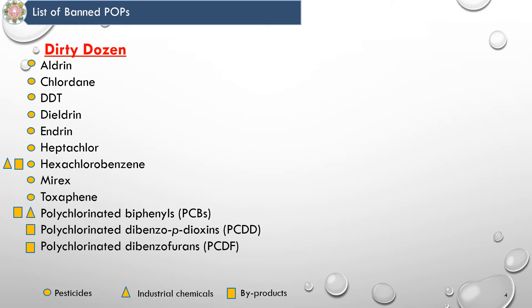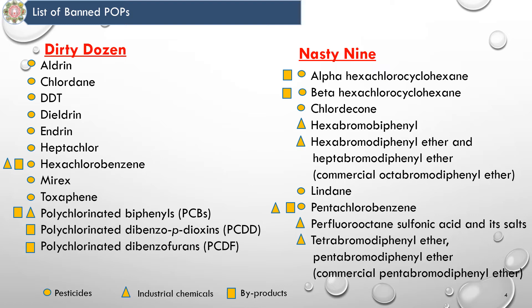This is a list of banned chemicals. First, the Dirty Dozen — they constitute pesticides, industrial chemicals and by-products. Pesticides include Aldrin, Chlordane, DDT, Dieldrin, Endrin, Heptachlor, Hexachlorobenzene, Mirex and Toxaphene. Industrial chemicals include Hexachlorobenzene and polychlorinated biphenyl. Dioxins and Furans are the by-products. The Nasty 9 group of chemicals are similarly made up of pesticides, industrial chemicals and by-products.